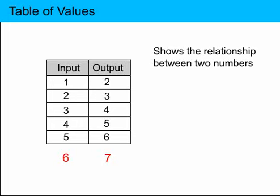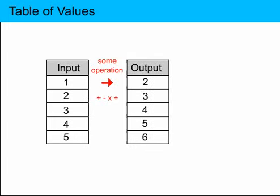Every table of values has a pattern similar to this. But the most important thing about a table of values is the relationship between the two numbers. If you take a look at the number on the left-hand column, it has a relationship with the number on the right-hand column, and that relationship is in the form of some kind of operation — like adding, subtracting, multiplying, or dividing. So some operation has been conducted on the number 1 to get the number 2. One that you could try would be adding 1: 1 plus 1 equals 2.